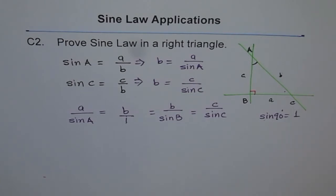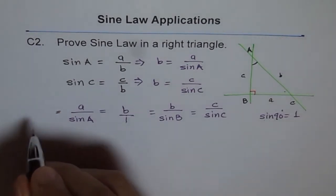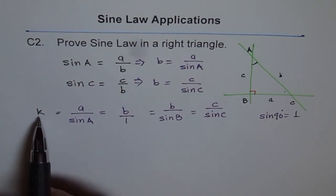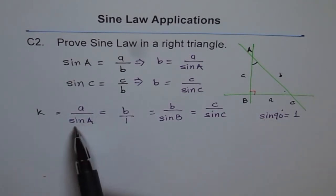And the constant which I was talking about is that b—the constant. So this equals constant. Whenever we're trying to solve a sine application, we are always actually looking for that constant, because then it becomes easier. It's just cross multiply: constant times sine of that angle gives you that side.